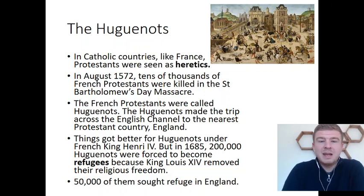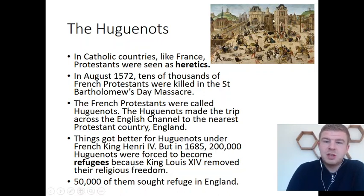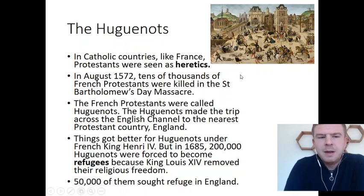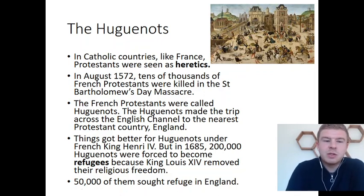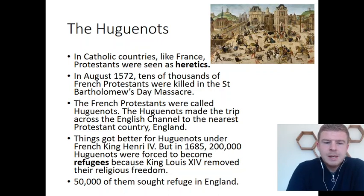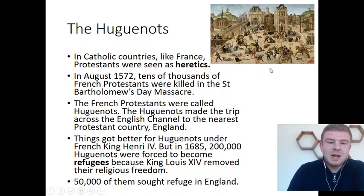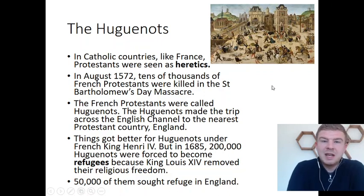It got so bad that in August 1572 — and this picture is a painting of this event — tens of thousands of French Protestants, or Huguenots, were killed in the St. Bartholomew's Day Massacre. The Huguenots, because they wanted to get away from horrible events like this, made the trip across the English Channel to the nearest Protestant country of England.